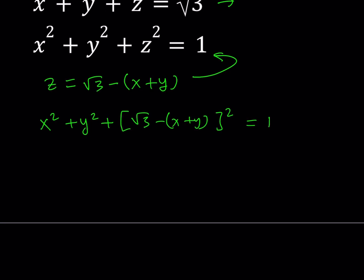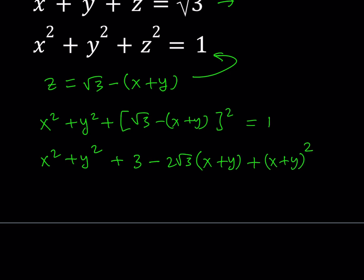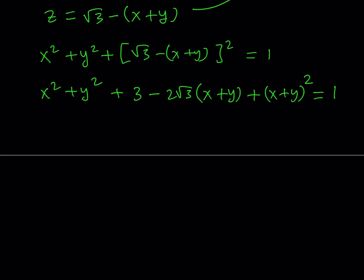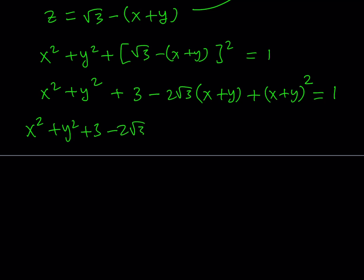Let's go ahead and square this as a difference — it's like a minus b quantity squared. This gives me x squared plus y squared plus 3 minus 2 root 3 times (x plus y) plus (x plus y) quantity squared. Expanding further: x squared plus y squared plus 3 minus 2 root 3 x minus 2 root 3 y plus x squared plus 2xy plus y squared.